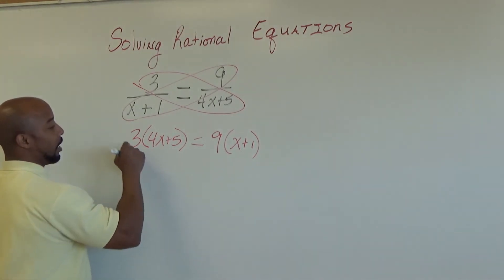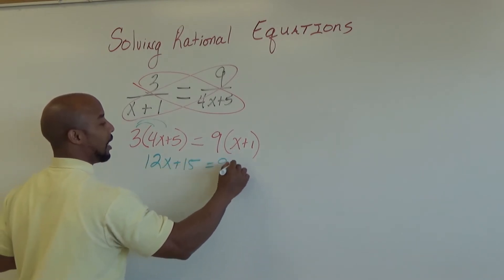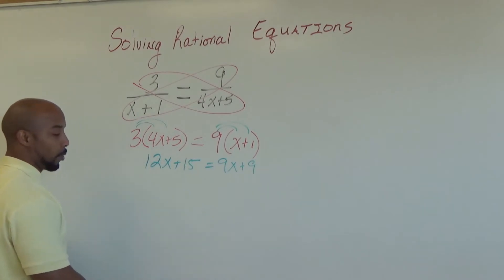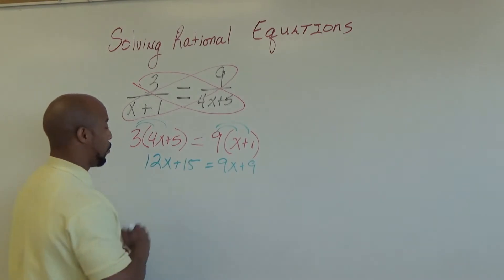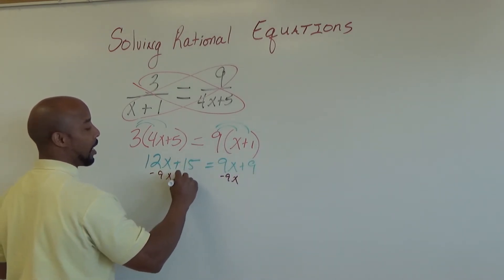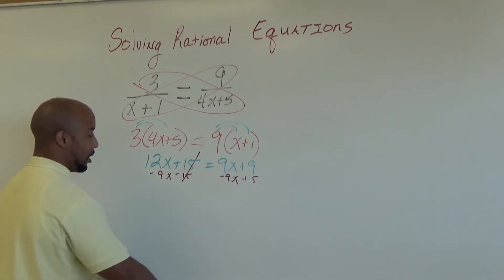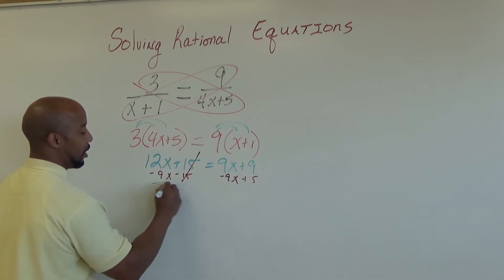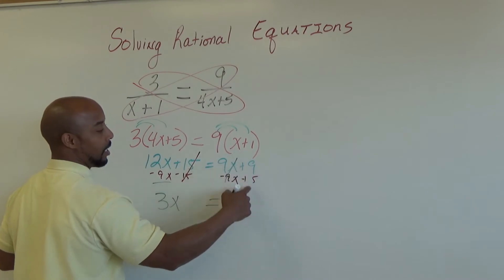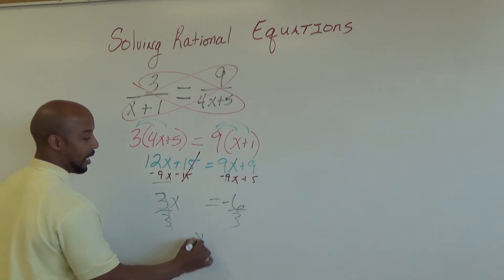Using the distributive property, we will end up with 12x plus 15 is equal to 9x plus 9. Notice we are dealing with a linear equation. When dealing with a linear equation, we solve it by moving all variables to one side — subtracting 9x from both sides and subtracting 15 from both sides. Doing so, 12x minus 9x gives us 3x, and 9 minus 15 gives us negative 6. Dividing both sides by the coefficient of x, we get x is equal to negative 2.